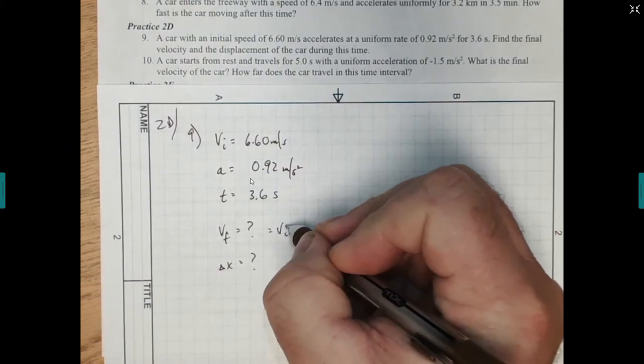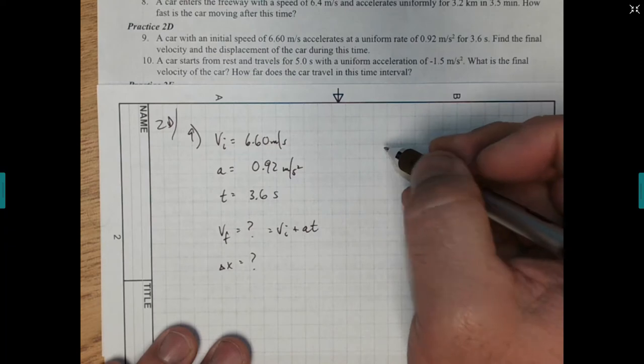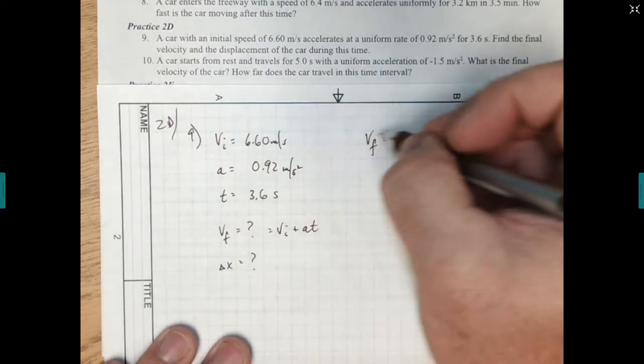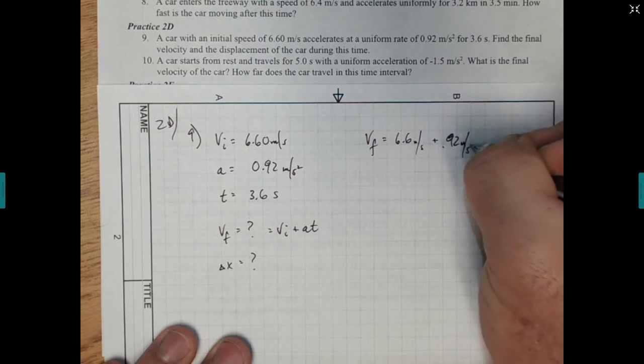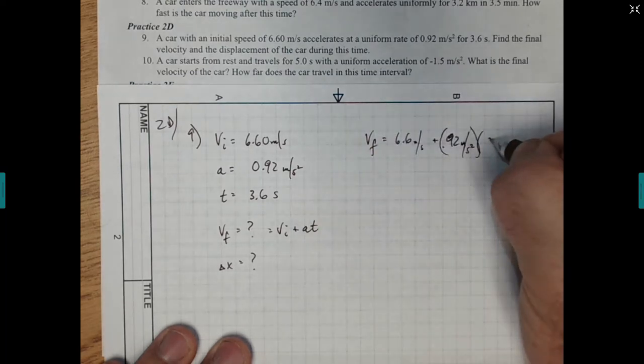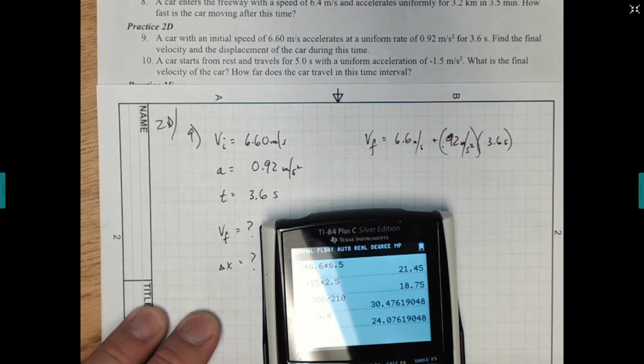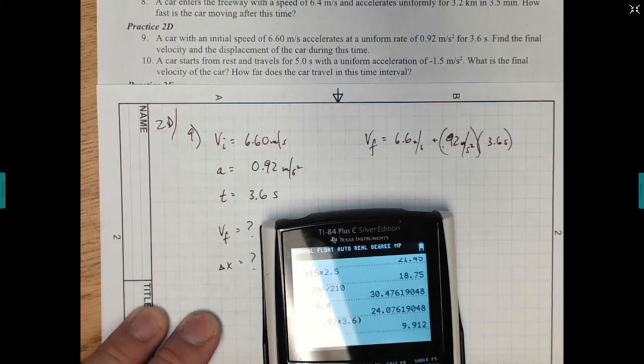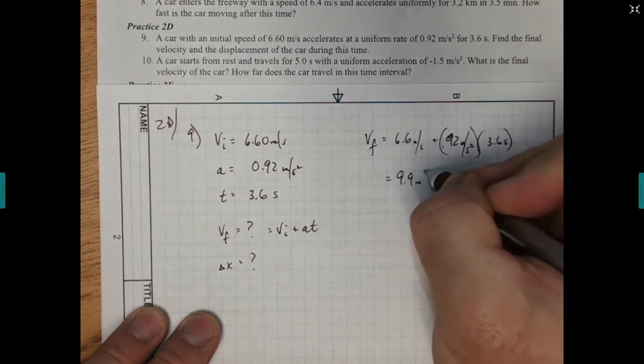So what we're going to use is initial velocity plus acceleration times time. And that's just our basic acceleration equation, change in velocity over time. So final velocity is initial velocity of 6.6 meters per second. We're going to add that to the acceleration of 0.92 meters per second squared times the time of 3.6 seconds. And then it's just cranking it through our calculator here. So we have 6.6 plus 0.92 times 3.6.